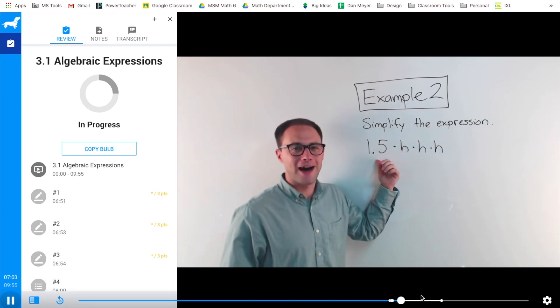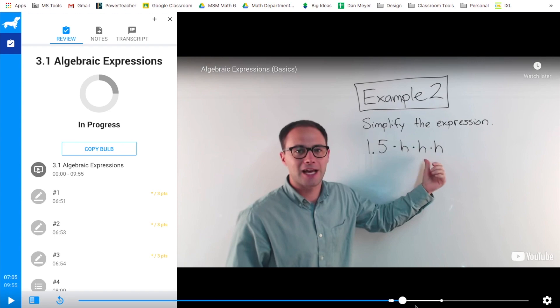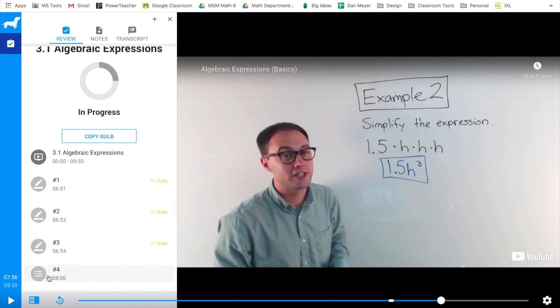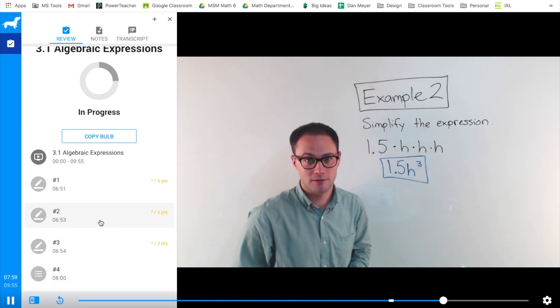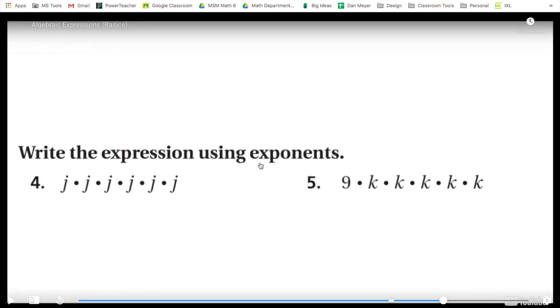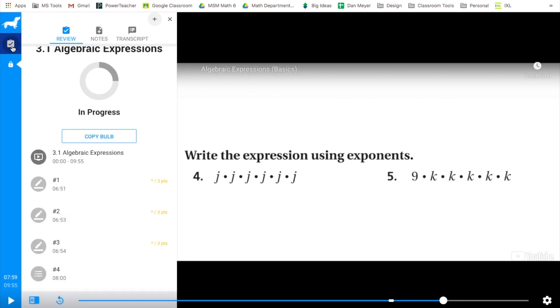Example two, simplify the expression. 1.5 times H times H... If you notice, there's another point here. That's another set of interactions or questions. I can't fast forward past that. Here's some more to try on your own. I have another set of interactions for number four and number five. If you can't see everything that you want, make it full screen. Here's my progress so far. I've answered the first three interactions. Here's number four. You can notice that this symbol is different than this. That's because this is a multiple choice interaction or question, and this was a short answer.